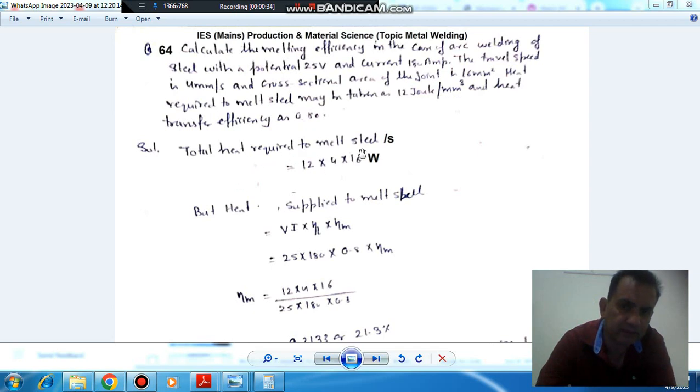The total heat required to melt steel per second is 12 times volume per second. Volume per second is cross-section area times speed, that is 16 mm² times 4 mm per second. So that is 12 times 4 times 16 Watt.